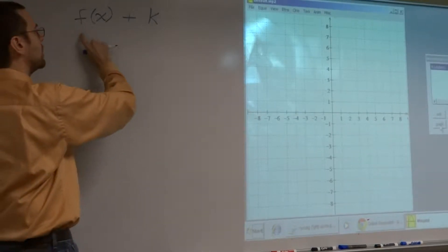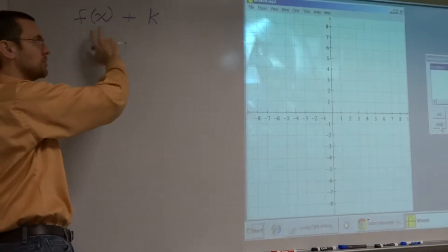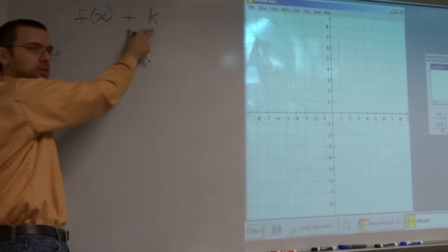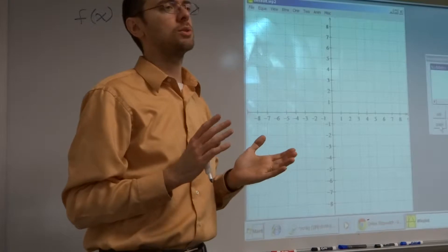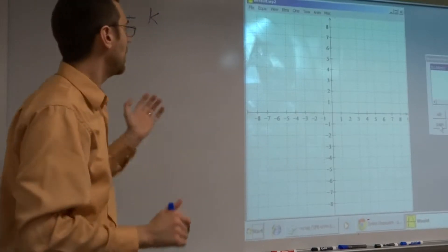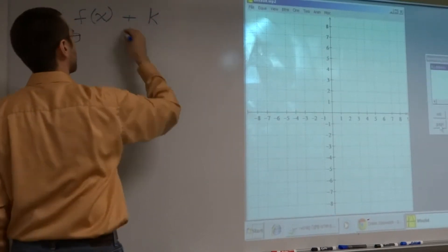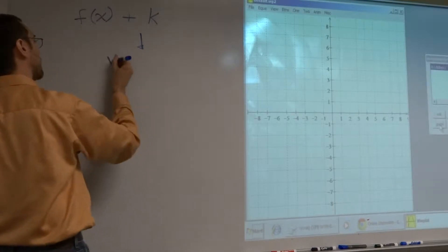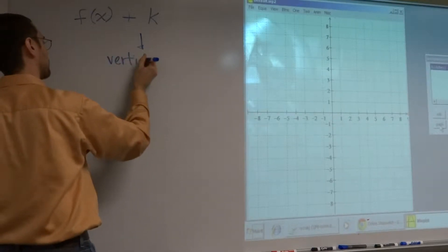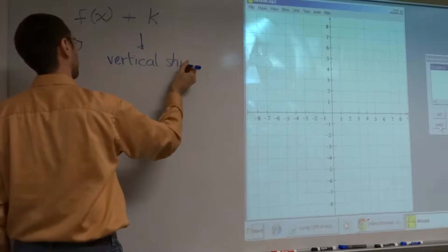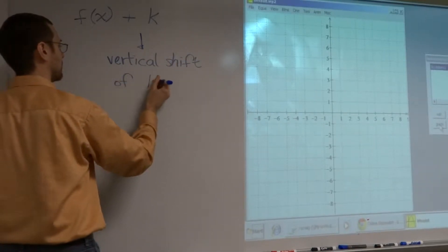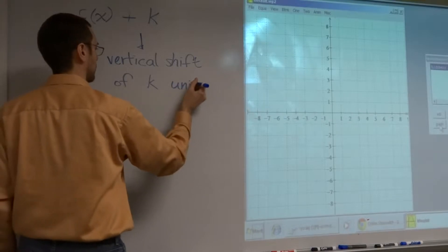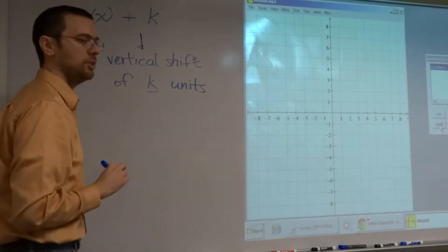Now, what this is, is you've got your function, and then outside your function, this guy's outside your function. It's like your function, and then maybe they're going to be adding or subtracting some numbers with that. And what that means for us, this guy right here indicates a vertical shift.